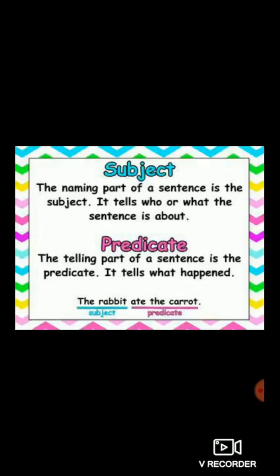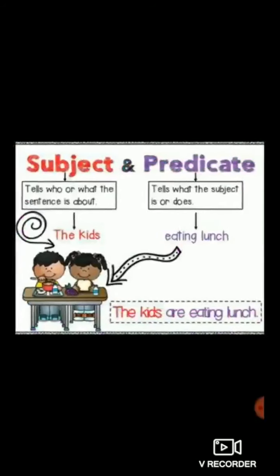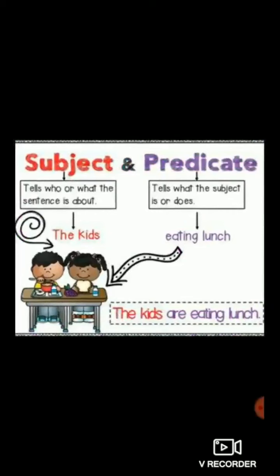Let's understand this concept with more examples. The subject tells who or what the sentence is about, whereas the predicate tells what the subject is or does. For example: 'The kids are eating lunch.' The kids tells who — who are eating lunch? Kids. So you ask a question on the predicate to get the subject as an answer: who are eating lunch? The kids. So the subject is 'the kids.'